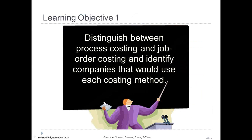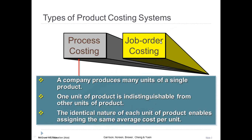Learning objective number one: let's distinguish between process costing and job order costing and identify the companies that would use each costing method. A process costing system is best used by companies that produce many units of a single product, where one unit of output is indistinguishable from another. Because the units are identical, the company will probably use an average cost system to determine product cost.